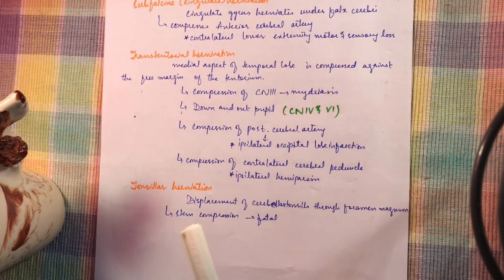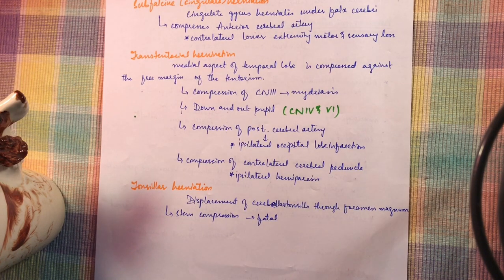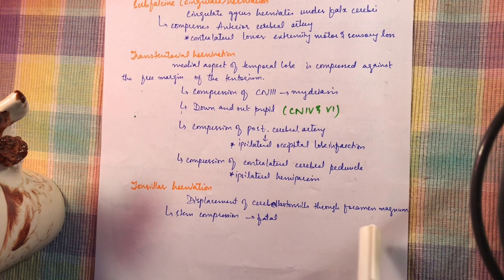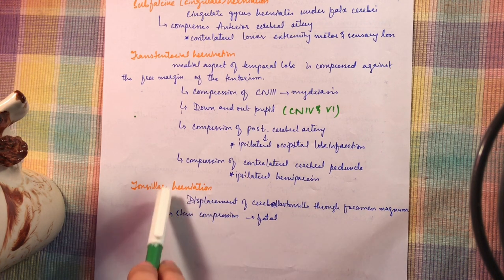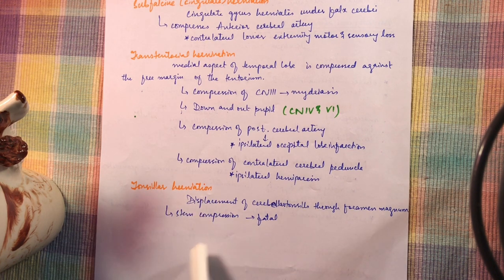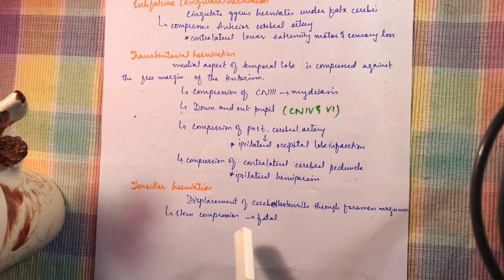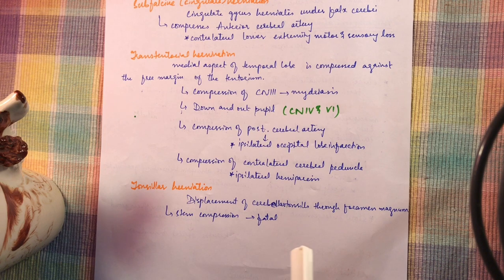Next is tonsillar herniation, which is the displacement of the cerebellar tonsils through the foramen magnum. Tonsillar herniation can cause brainstem compression and can be fatal because it involves the cardiac and respiratory centers.